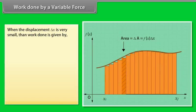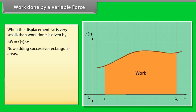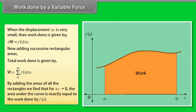Work done by a variable force. When the displacement Δx is very small, then work done is given by Δw = fx Δx. Now adding successive rectangular areas, total work done by w is approximately equals to summation from initial position xi to final position xf of product of fx and Δx. By adding the areas of all the rectangles, we find that for Δx tends to zero, the area under the curve is exactly equal to the work done by fx.